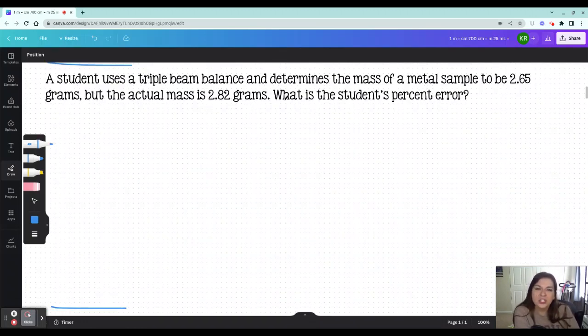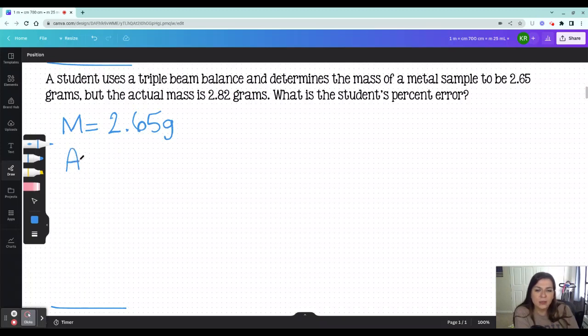All right, in the second question, a student uses a triple beam balance and determines the mass of a metal sample to be 2.65 grams, but the actual mass is 2.82 grams. What is the student's percent error? Okay, I just say that because triple beam balances are terrible. So the measured value is 2.65 grams. They're so easy to get out of whack and be miscalibrated. And I can just see this being a problem.